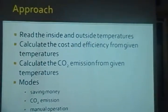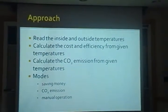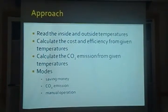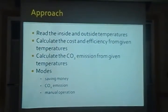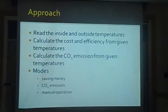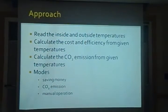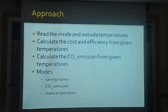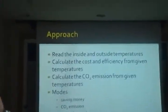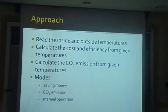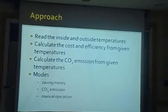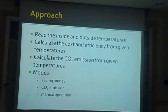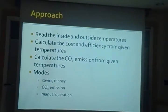The system uses two temperature inputs — one for inside and one for outside — and calculates the cost, efficiency, and carbon dioxide emission from those temperatures. The system has three modes: one for saving money, one for minimizing carbon dioxide emission, and a third for manual operation. In money-saving mode, the system calculates the cost of each heating system and switches to the less expensive one. In CO2 mode, it calculates emissions and switches to the lower-emitting system. In manual mode, the user can directly choose the heat pump or oil furnace.